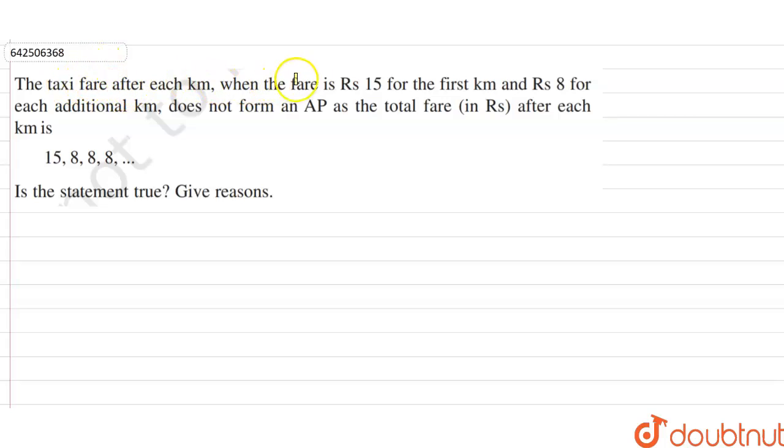The taxi fare after each kilometer, when the fare is Rs.15 for the first kilometer and Rs.8 for each additional kilometer, does not form an AP as the total fare in rupees after each kilometer is 15, 8, 8, 8, and so on.